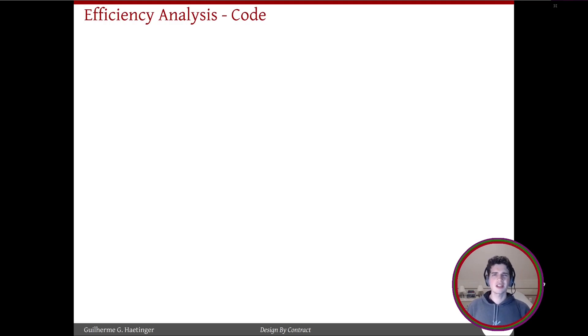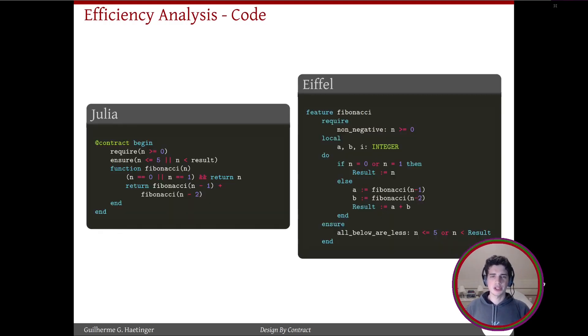A small efficiency analysis of the code is comparing Julia and Eiffel code, comparing them to design by contract code with code not using design by contract.